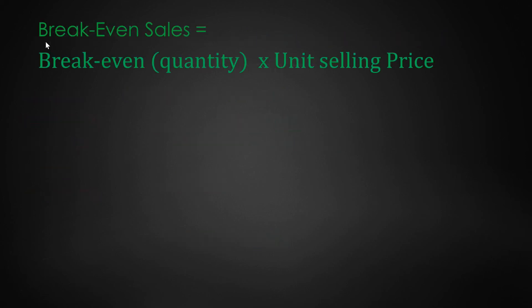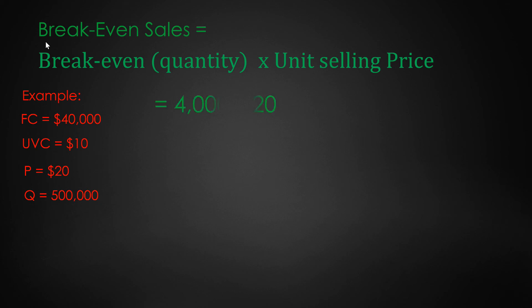We can also compute the break-even point in dollar sales by multiplying the break-even quantity times the unit selling price. For our example, that's 4,000 units times $20, which equals $80,000. So when we have sold $80,000 worth of goods, we are breaking even.